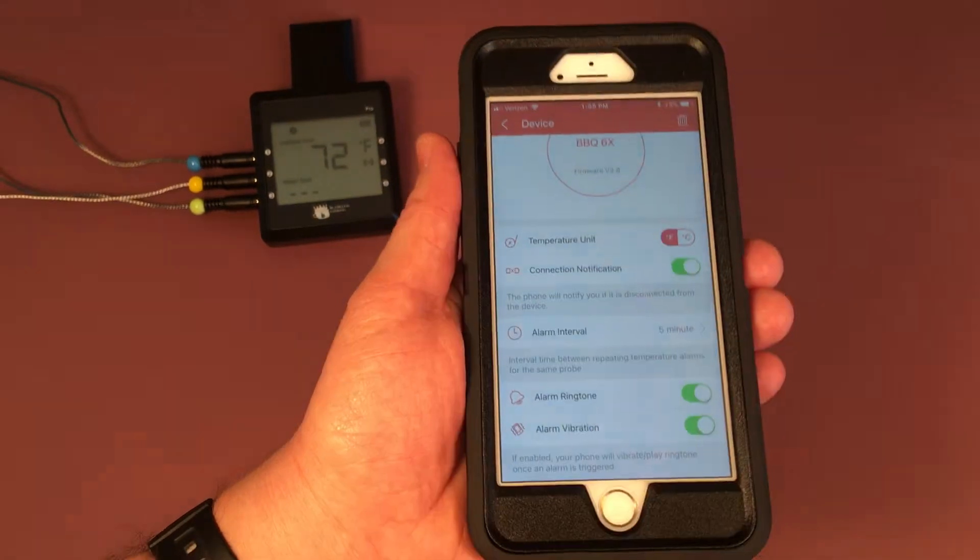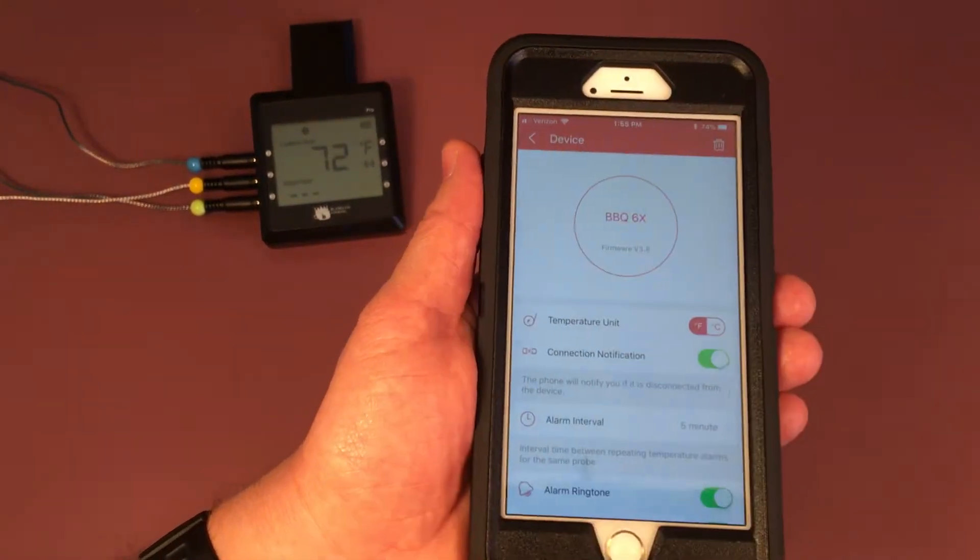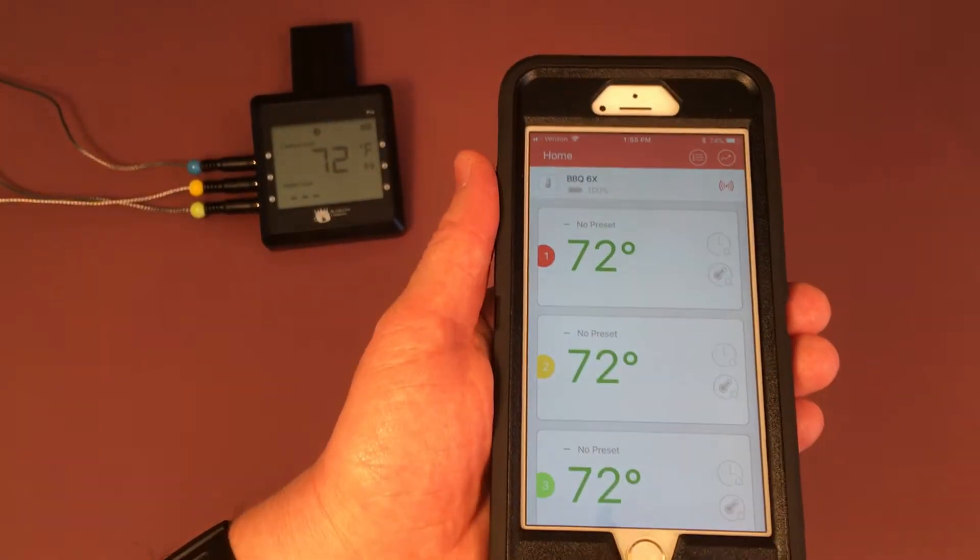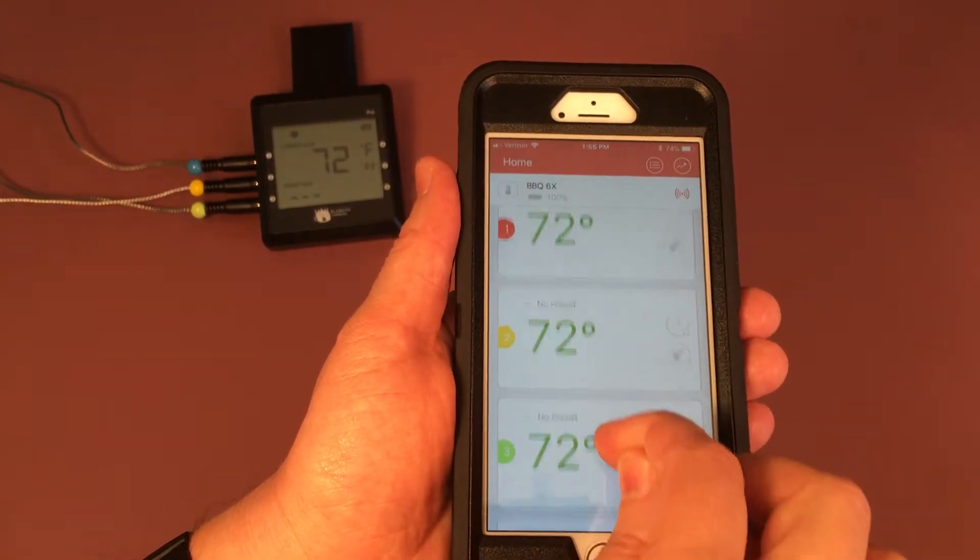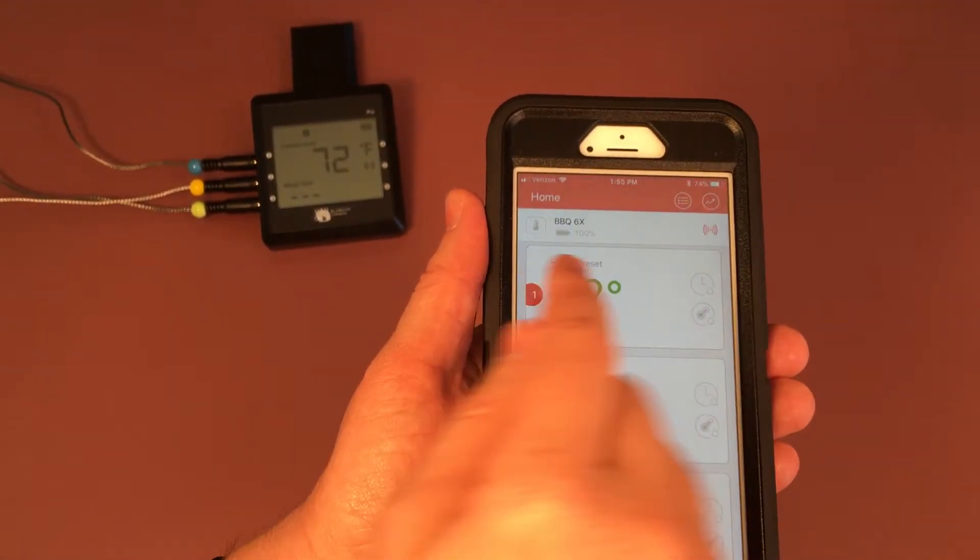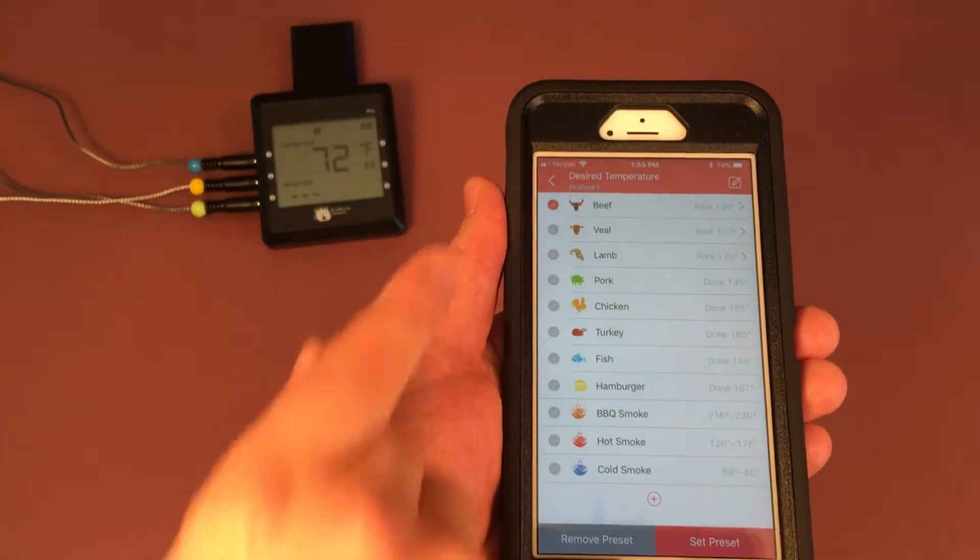So what we're going to do is go back to the home screen. Here it says no preset. We're going to click on that and here you see you actually have 11 pre-programmed presets.